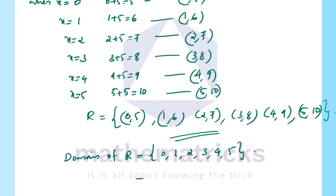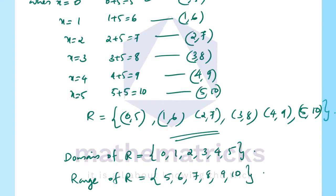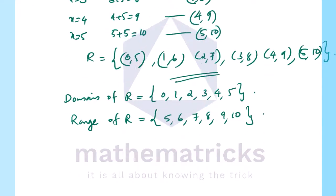Now the domain of R is the set of all first elements: {0, 1, 2, 3, 4, 5}. The range of R is the set of all second elements of the ordered pairs: {5, 6, 7, 8, 9, 10}. This is the domain and range.